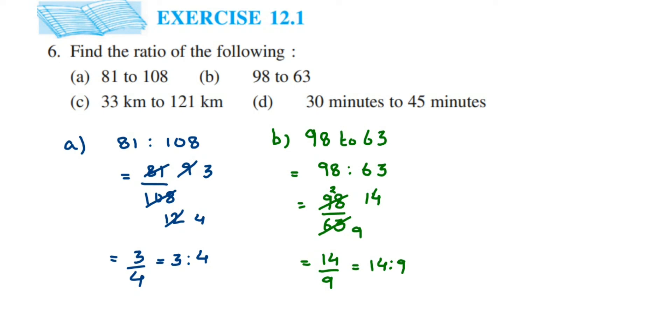Now next question, this is 33 kilometers is to 121 kilometers. So whenever you're writing down the ratios, we don't write units. So 33 is to 121. We don't write units here because units are same here, so I'm not writing down the units here. We're going to convert this into fraction, so 33 upon 121.